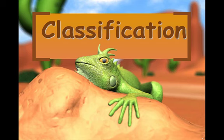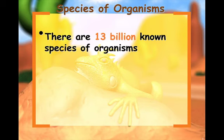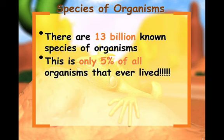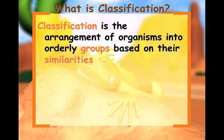We'll be working on Chapter 18, which covers classification. Classification is where we group organisms into different categories based on their characteristics. There are 13 billion known species of organisms, and this is only 5% of all organisms that have ever lived. New organisms are still being found and identified today in remote places like jungles and deep in the ocean.